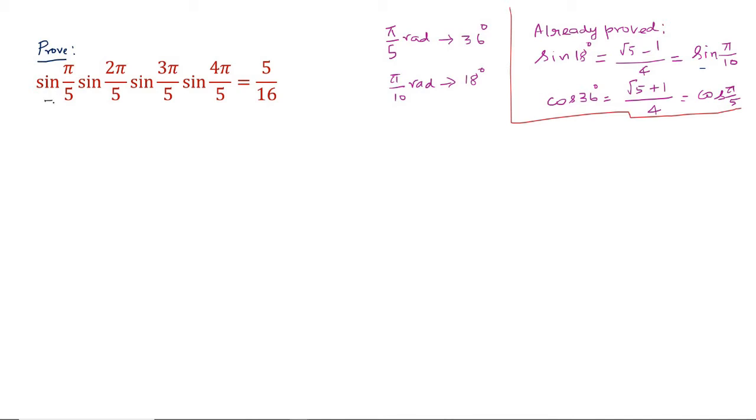First, we will find out what sin(π/5) is. Sin(π/5) would be sin(36°). We only proved sin(18°) already, but we want sin(36°) now. So, √(1 - cos²(π/5)), but cos(π/5) we proved to be (√5 + 1)/4.